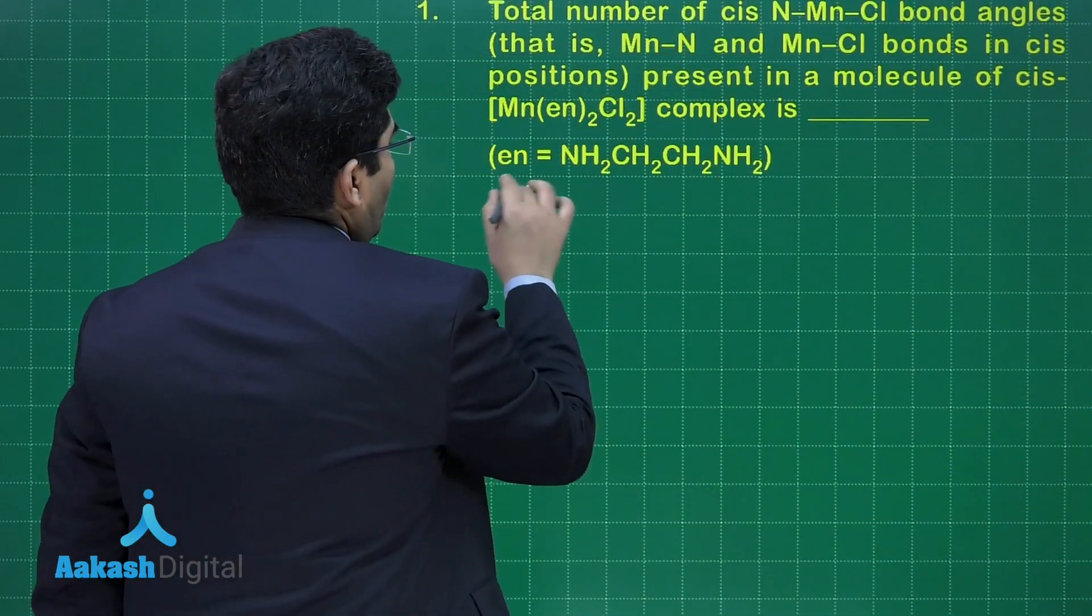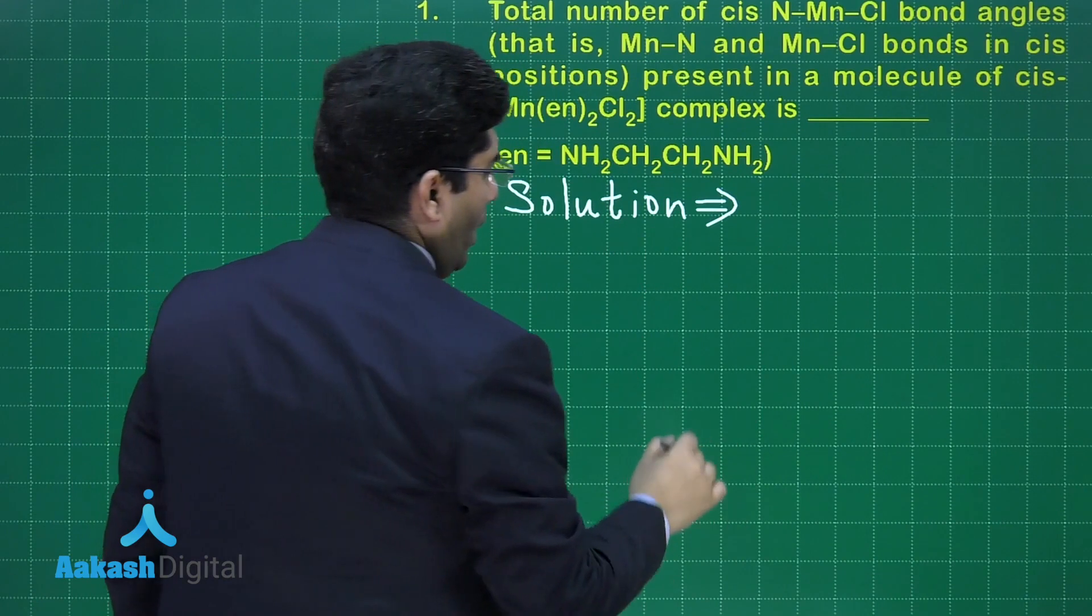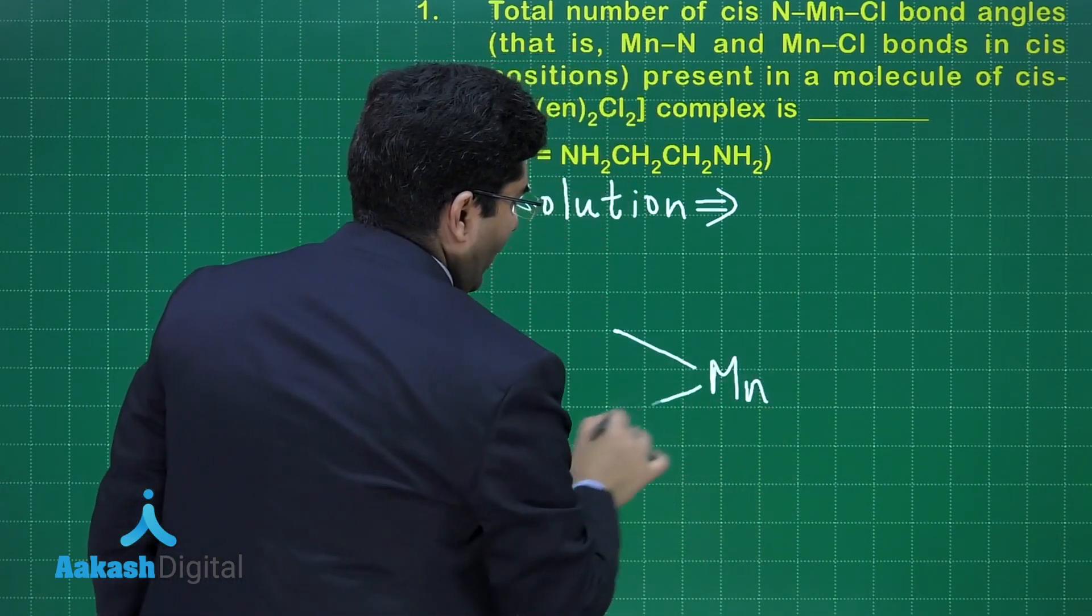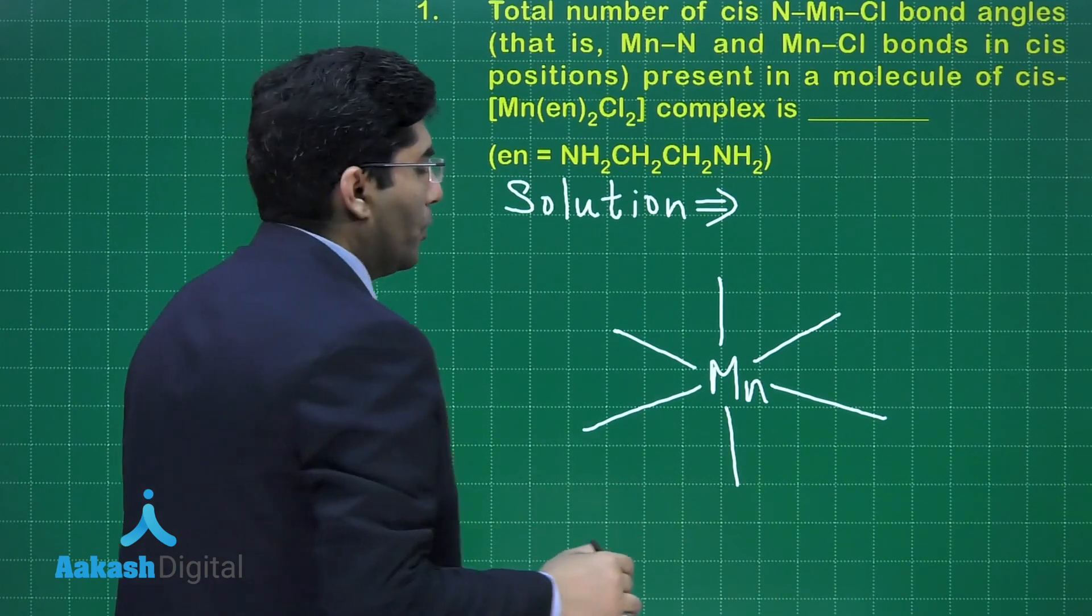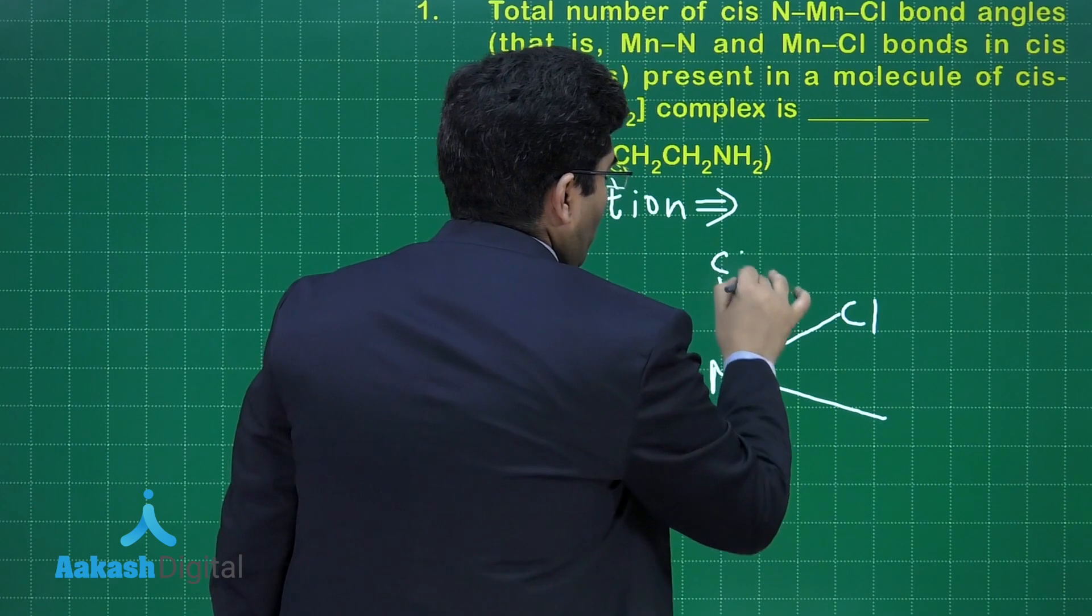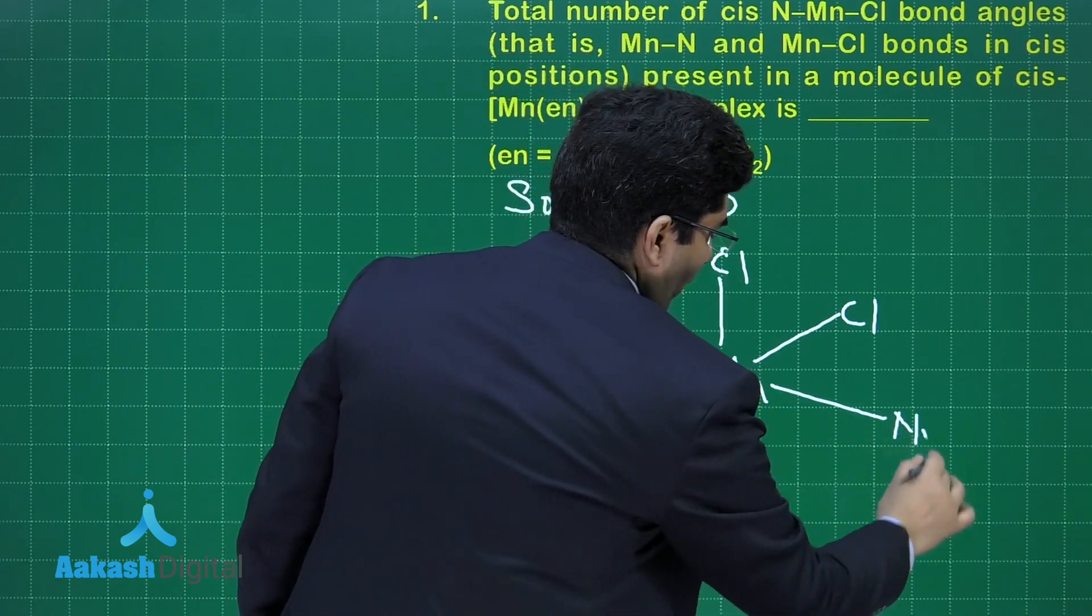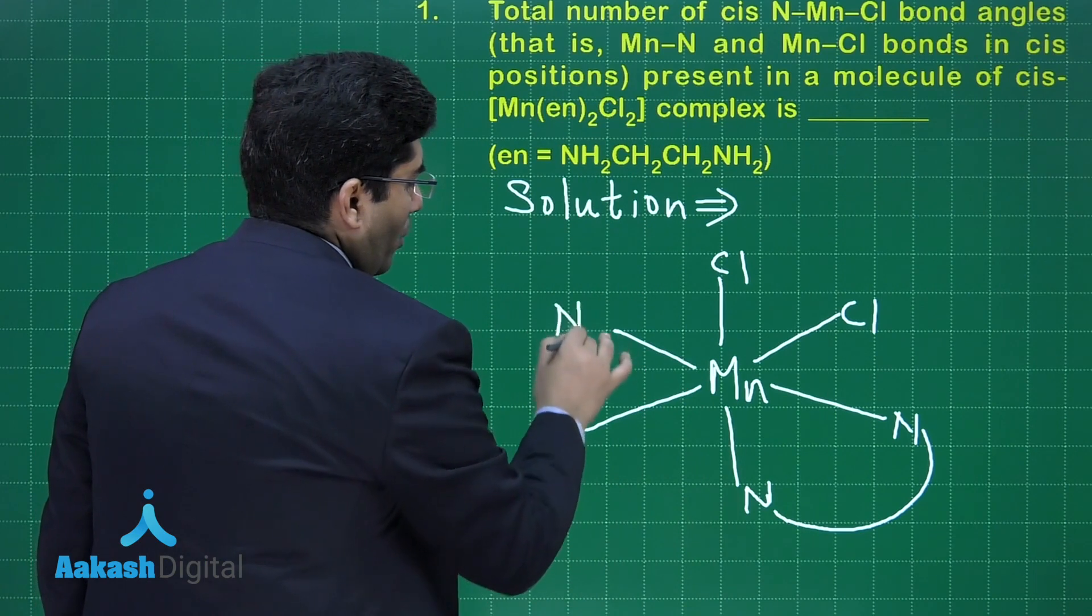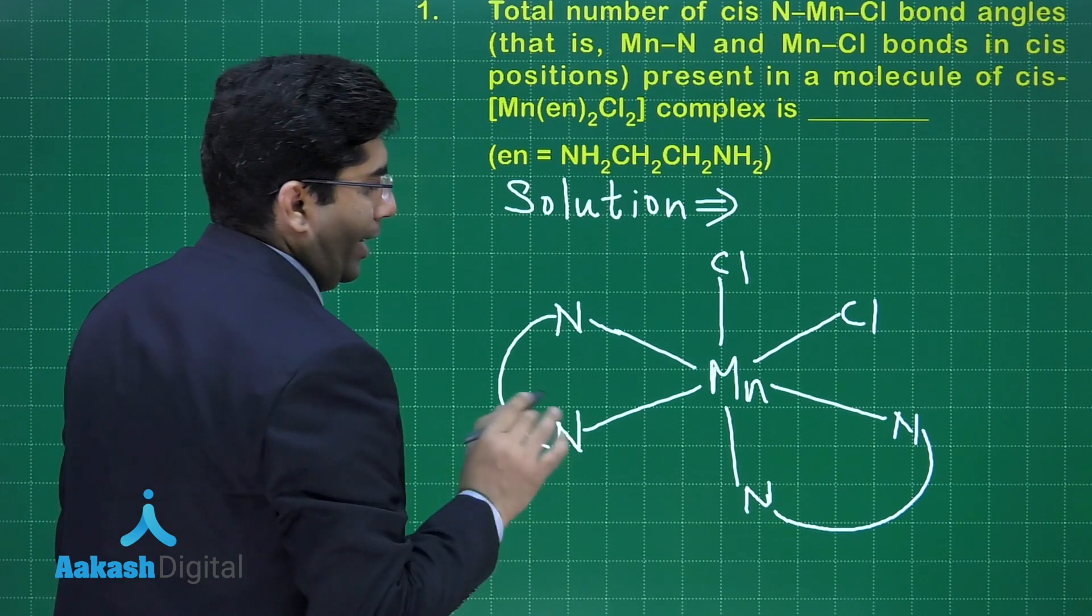The solution is: the central atom is manganese and it is forming an octahedral complex. Since it is in cis form, that is why the ethylene diamine will be like this. So, this ethylene diamine is attached, and one more ethylene diamine ligand is attached to it.